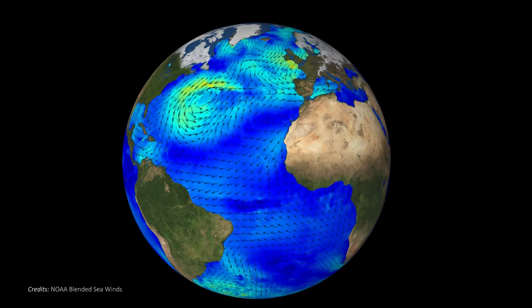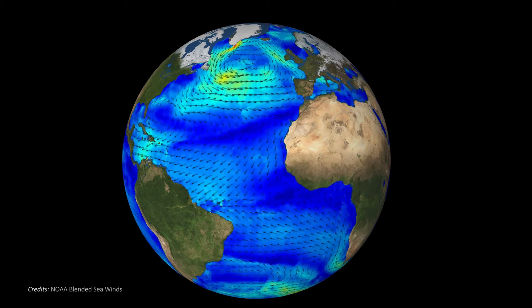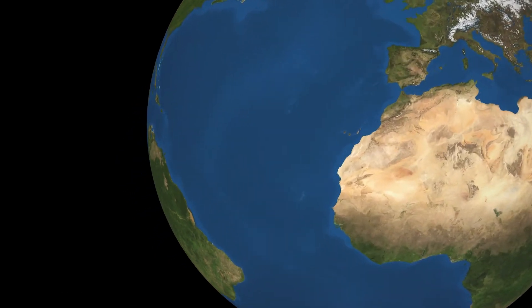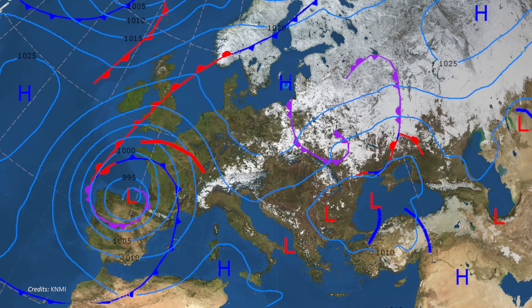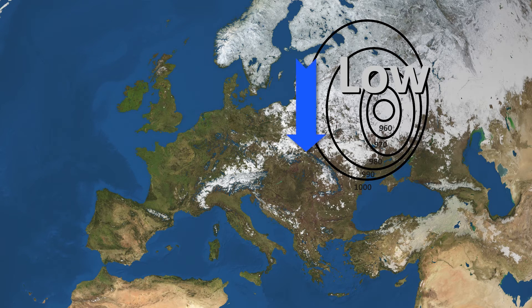We are all familiar with high and low pressure systems in the atmosphere. For example, if we look at a weather chart, we can identify high and low pressure systems. Living in northern Europe, you may have noticed that if there is a low pressure system with its centre to the east of you, it will bring cool Arctic air to your location.